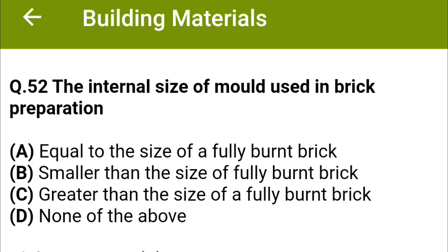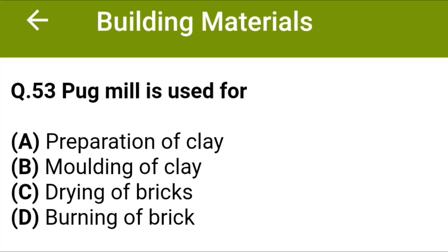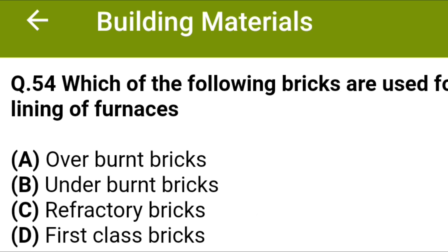Pug mill is used for: option A preparation of clay, option B molding of clay, option C drying of bricks, option D burning of bricks. The correct answer is option A: preparation of clay. Which of the following bricks are used for lining of furnaces? Option A overburnt bricks, option B underburnt bricks, option C refractory bricks, option D first class bricks. The correct answer is option C: refractory bricks.